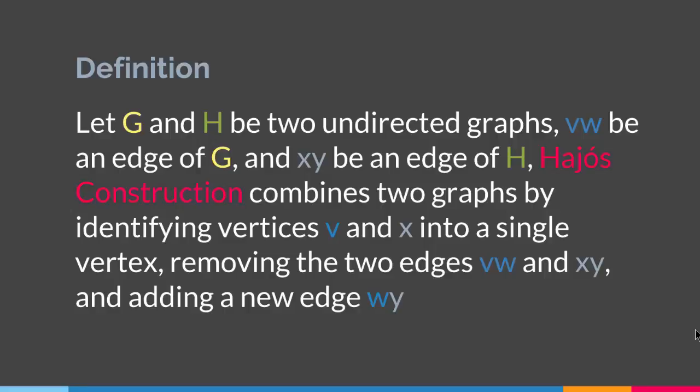Let's suppose graph G and graph H are two undirected graphs, VW be an edge of G and XY be an edge of H. Hajos Construction combines two graphs by identifying vertices V and X into a single vertex, removing the two edges VW and XY, and adding a new edge WY to create a new graph. As you can see, there are a series of steps in order to create a new graph by Hajos Construction.